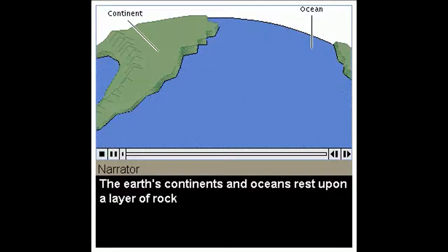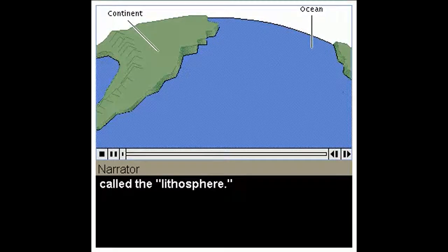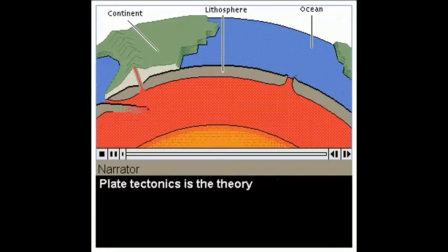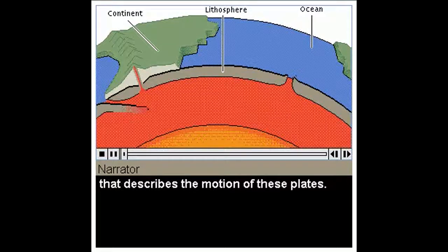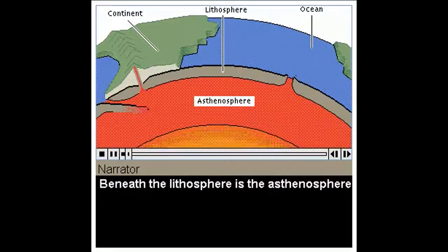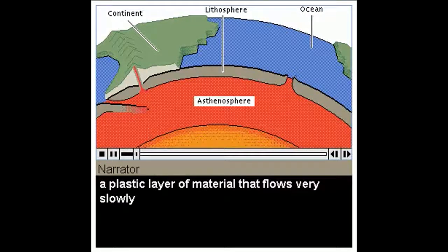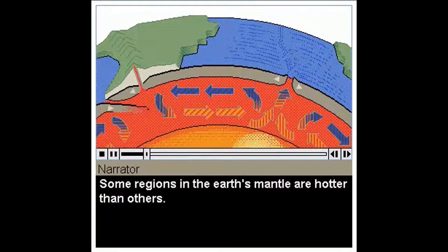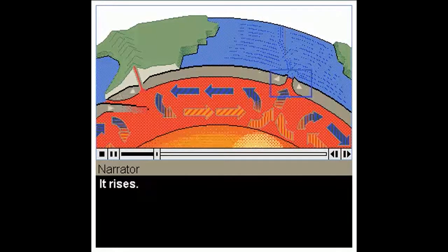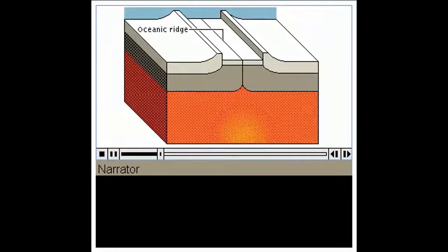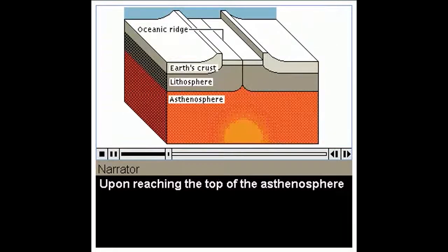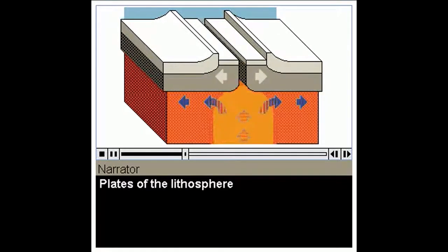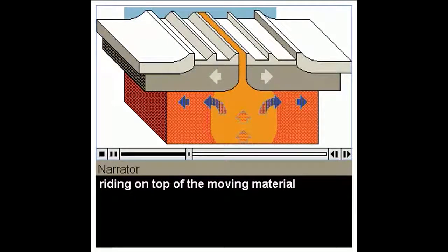The earth's continents and oceans rest upon a layer of rock called the lithosphere. The lithosphere consists of roughly a dozen separate rock masses or plates. Plate tectonics is the theory that describes the motion of these plates. Beneath the lithosphere is the asthenosphere, a plastic layer of material that flows very slowly as it is heated from the mantle below. Some regions in the earth's mantle are hotter than others. It rises. Upon reaching the top of the asthenosphere, the material spreads out. Plates of the lithosphere, riding on top of the moving material, move apart.